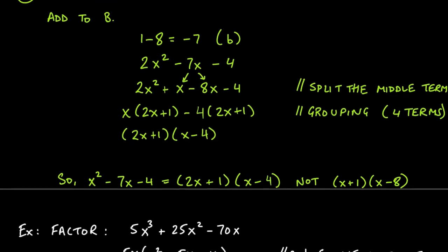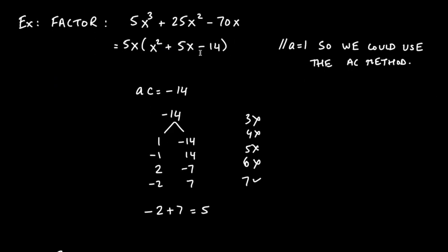Let's look at another example: factor 5x³ + 25x² - 70x. Remember the factoring tree from the beginning of the chapter — the first question is always: is there a GCF? Yes — all terms are divisible by 5 and all have an x in common, so we factor out 5x and we're left with x² + 5x - 14.